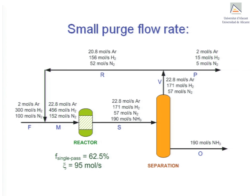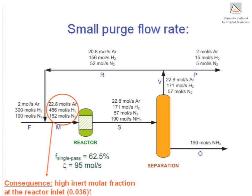If there were no purge stream, this system could not operate at steady-state because the inert would continuously enter through stream F, not react in the reactor, and not leave. It is important to note that a small purge flow rate results in a high inert concentration at the reactor inlet stream M. In this particular case, 3.6% molar in stream F. The inert concentration is only 0.5% molar. This could undermine the reactor performance and in this case is not a desirable outcome.